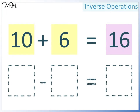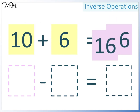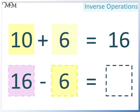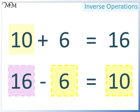Alternatively, we could write it like this. The largest number must go at the start. That number is 16. This time, we'll subtract 6. And in the final space, we'll have 10. 16 take away 6 equals 10.